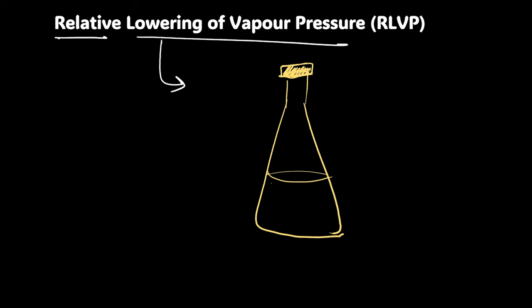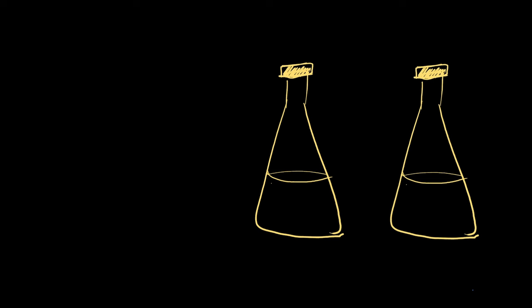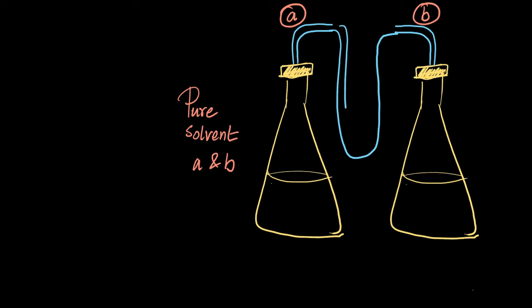I've got a flask over here with some liquid in it. Let's say there's water in it. Let's get two of these flasks, same liquid in it. And there's nothing else in it. So these are pure solvents in these flasks A and B. And I'm just going to connect them with an apparatus to measure their vapor pressure. This is just like a simple manometer, put some liquid in it. And if the level of the liquid is the same, then they are at the same pressure.